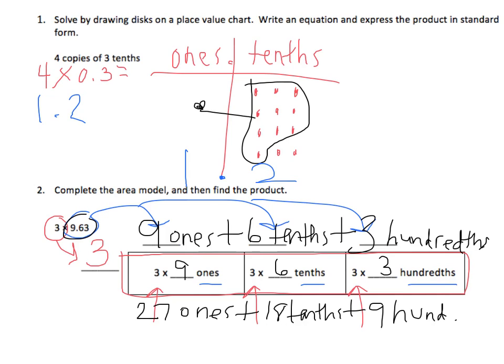So now I need to add these up. I have 27 ones. I have 18 tenths. And it's important to remember, 18 tenths, my last digit needs to end in the tenths place. So the decimal needs to be between the 1 and the 8. 18 tenths and 9 hundredths.